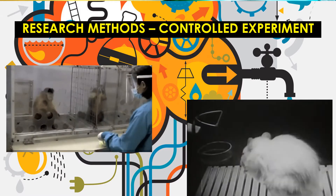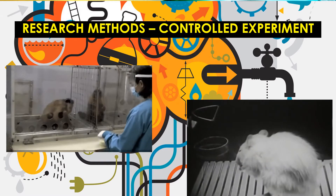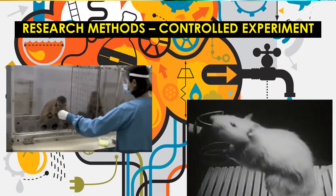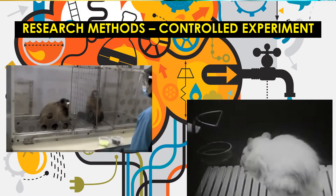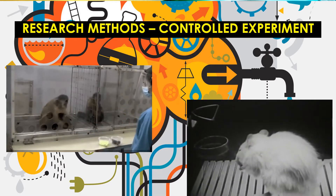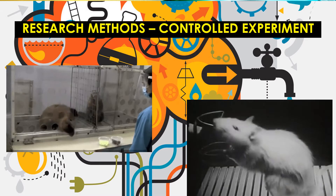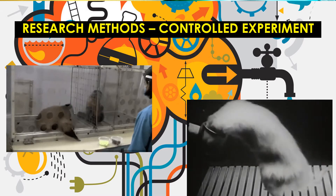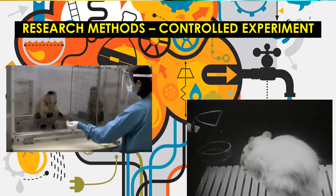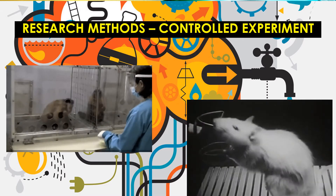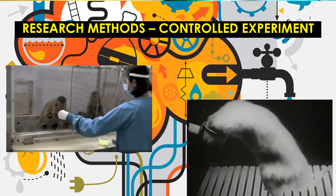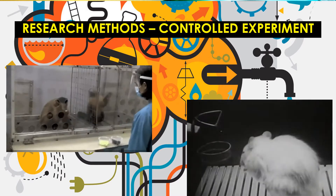In this video, you're going to learn about one of the most important and most common research methods used in the sciences. This is called the controlled experiment, which is used to try to find cause and effect.